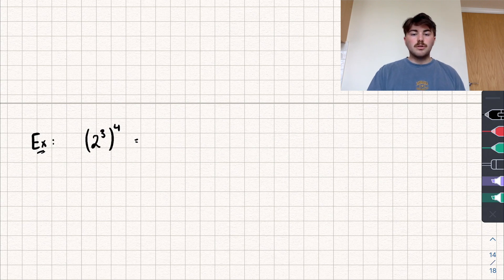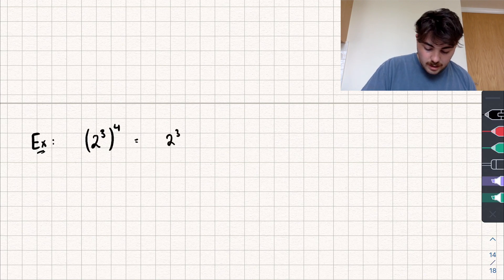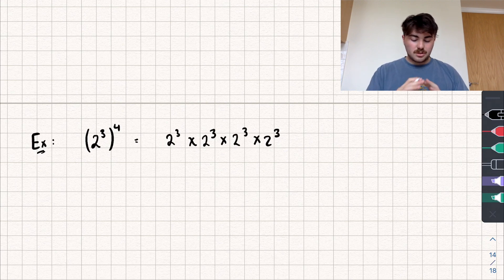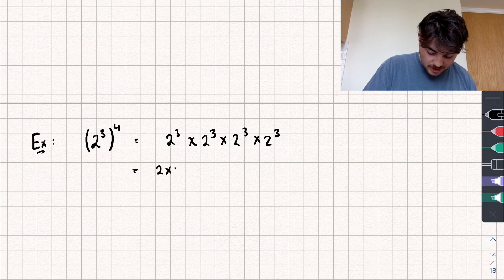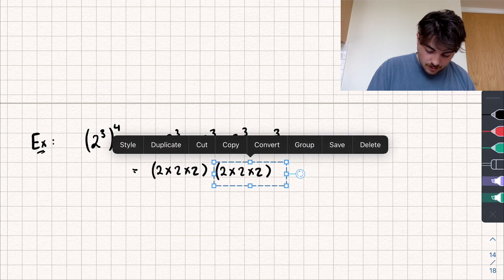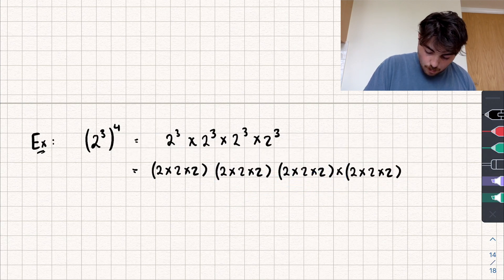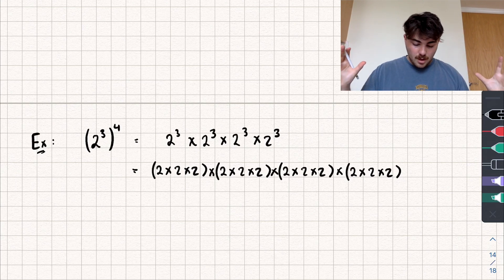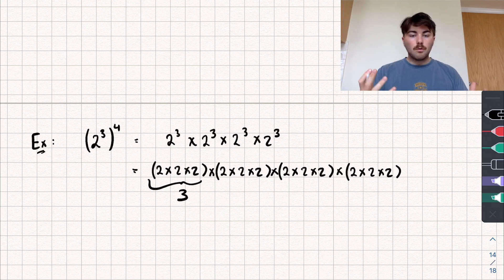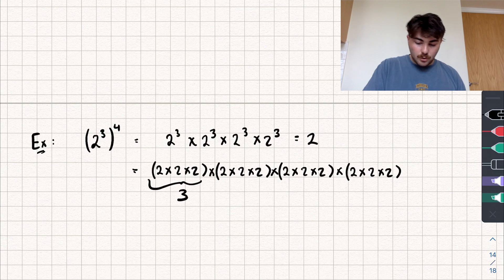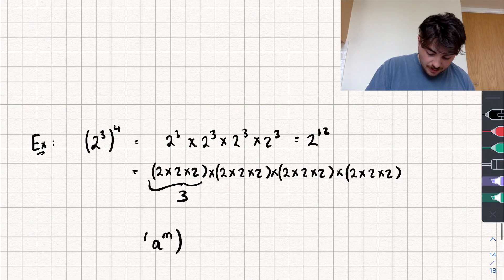Now let's look at a third law. We have two cubed all to the power of four. This means two cubed multiplied by itself four times: two cubed times two cubed times two cubed times two cubed. Writing it out fully, we have four blocks of three twos all multiplied together — that's twelve twos in total. So two cubed to the power of four equals two to the power of twelve, which is three times four.